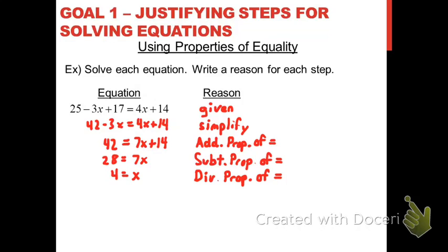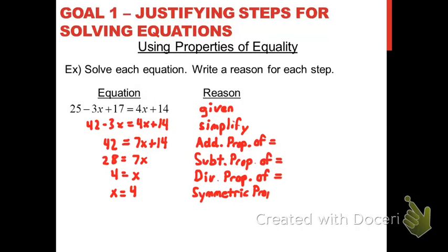There is one more thing to show here. The variable is on the right side and the constant is on the left, and while there's nothing wrong with leaving it that way, we often prefer writing it with the variable on the left and its equivalent value on the right. Whenever you just switch what's on either side of the equation like that, you're using the symmetric property of equality.